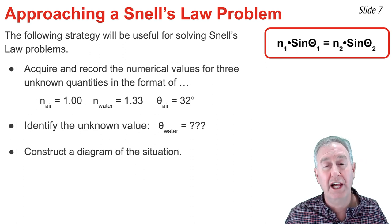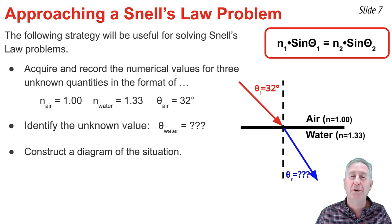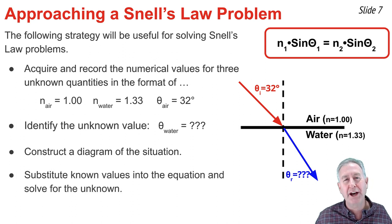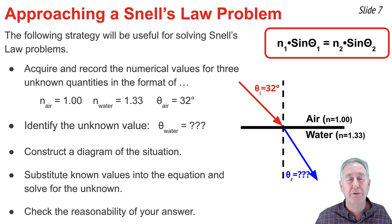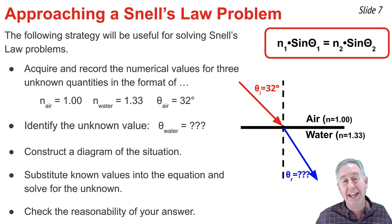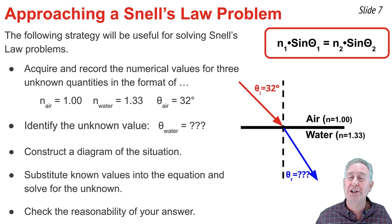Third, construct a diagram to help visualize the situation — a ray diagram works well. Record the known values on the diagram. Fourth, substitute the known values into Snell's Law and perform the necessary algebra to solve for the unknown. Finally, ask yourself: is my calculated answer reasonable? For light traveling from a small index of refraction to a larger one, the light bends towards the normal and the angle of refraction should be less than the angle of incidence. The opposite is true for light going from a large to a small index of refraction.